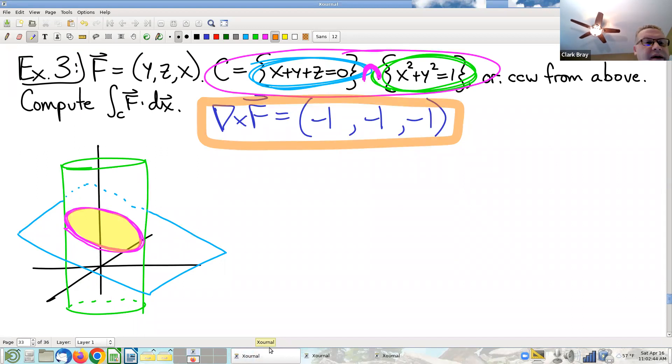Good news, we already computed that curl. So curl, this curl calculation did us a couple of favors. Computing this curl, on the one hand, that's what eliminated the fundamental theorem of line integrals as a possibility. It's also going to be my integrand for my Stokes's theorem calculation.